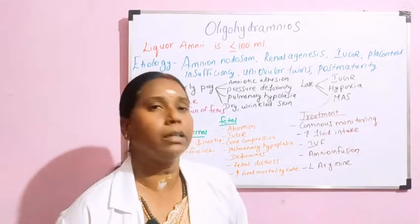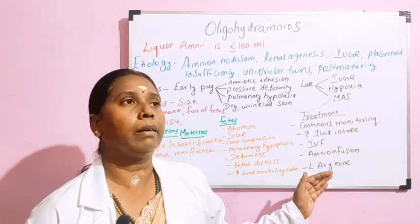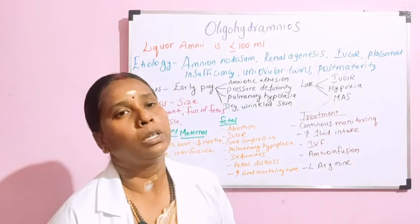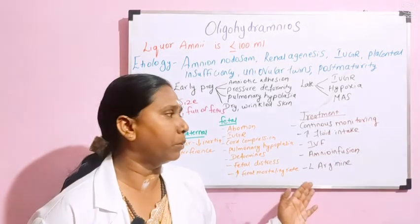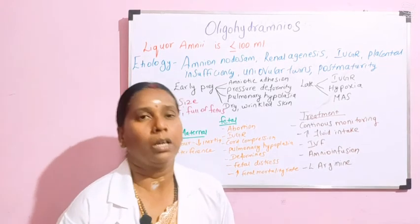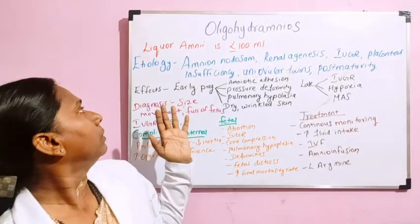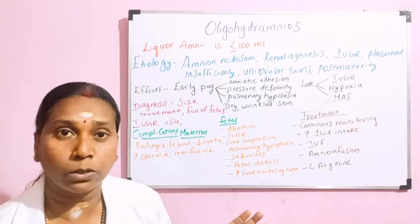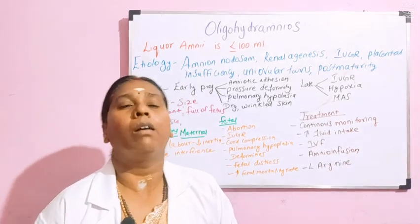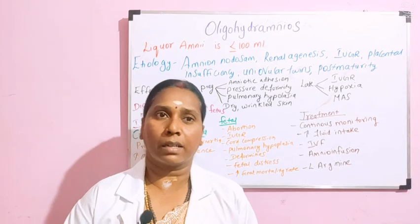And then L-Arginine — this is the common drug of choice for oligohydramnios. It is a vasopressin group of drug and increases the amount of fluid in the body. Many researchers have found it to be effective and recommend it in many hospitals to improve amniotic fluid level. With this we complete oligohydramnios, having discussed the definition, effects, etiological factors, diagnosis, complications, and management. If you have doubts, kindly give your comments in the comment box. Take care. Bye.